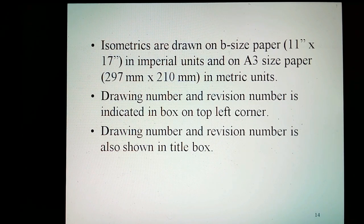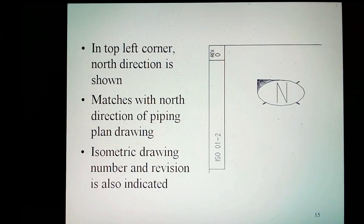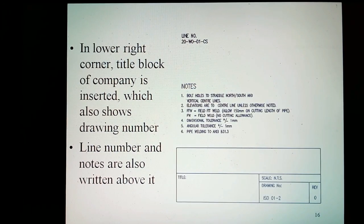Isometrics are drawn on B size paper (11 inch by 17 inch) in imperial units and on A3 size paper (297 mm by 210 mm) in metric units. Drawing number and revision number are indicated in a box on the top left corner and also shown in the title box. In the top left corner, the north direction is shown, which matches with the north direction of the pipe plant drawing. The isometric drawing number and revision are also indicated. In the lower right corner, the title block of the company is inserted, which also shows the drawing number. Drawing number and notes are also written above it.